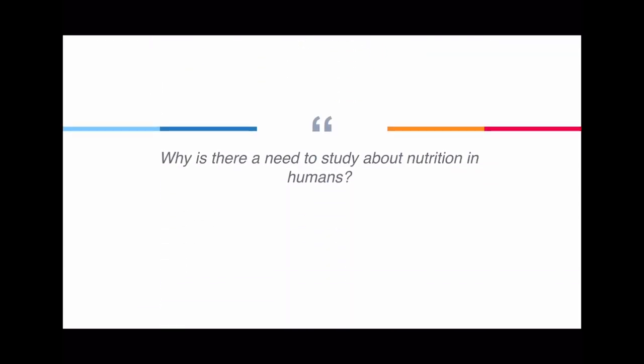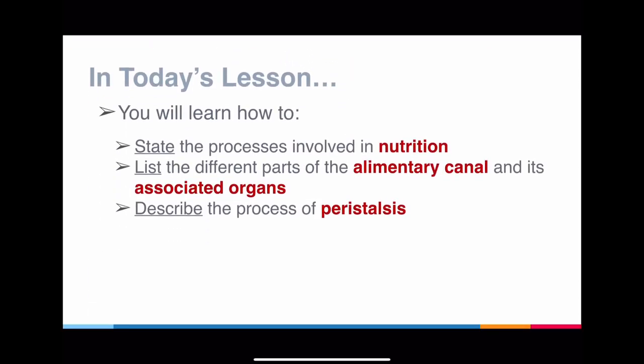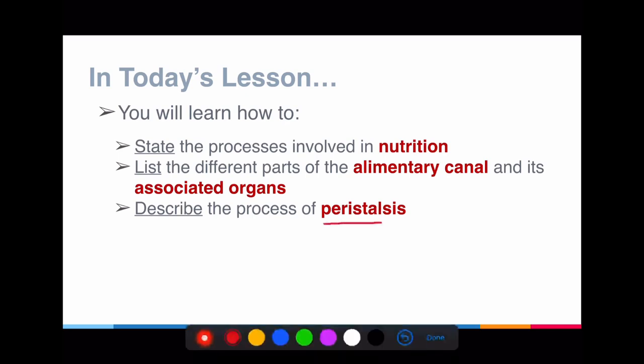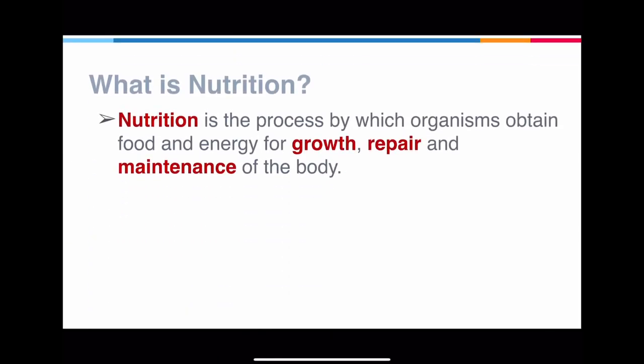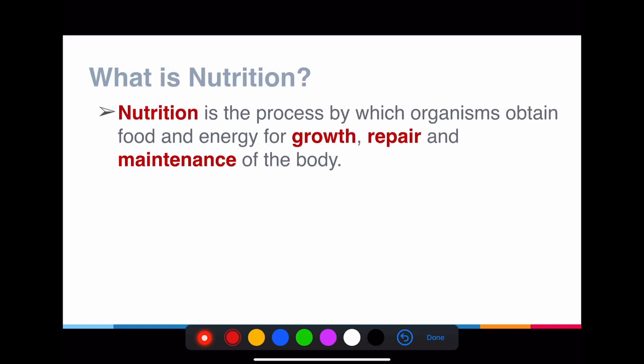With that, let's go on to the first part of this chapter. We're going to explore what are some of the processes involved in nutrition. We're also going to see how we can label different parts of the alimentary canal and associate the organs related to it. And last but not least, we'll go through what is called peristalsis — a new term for you.